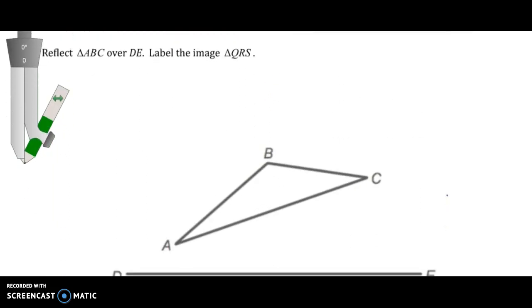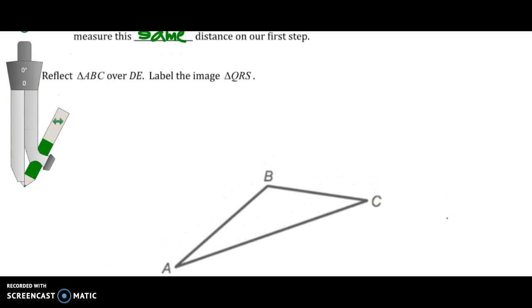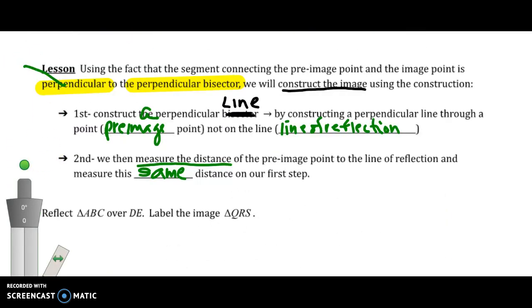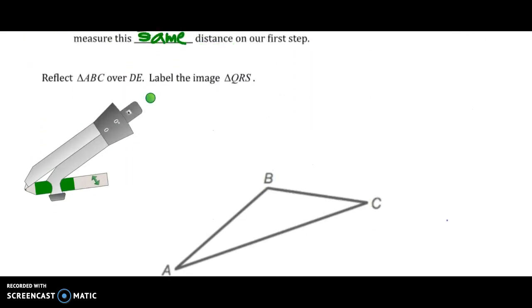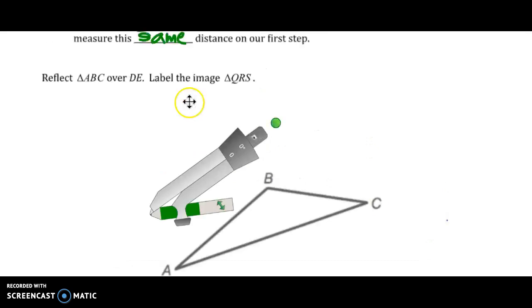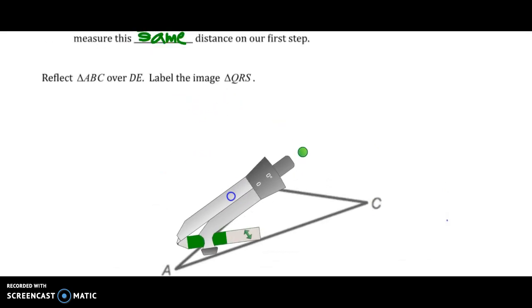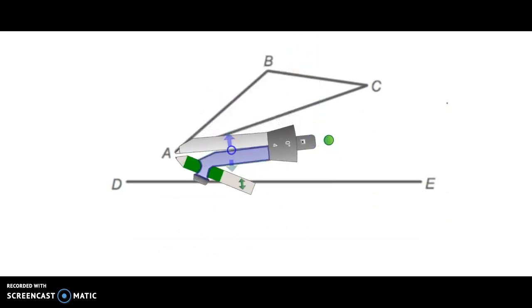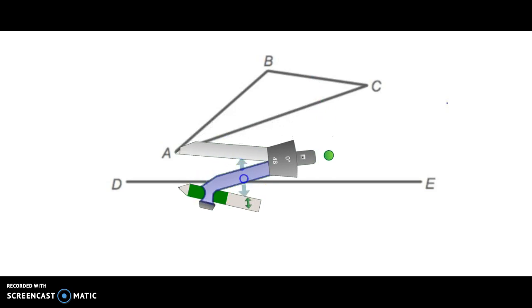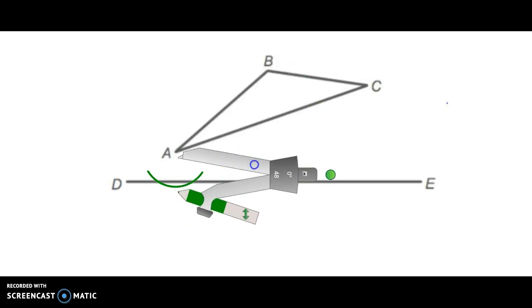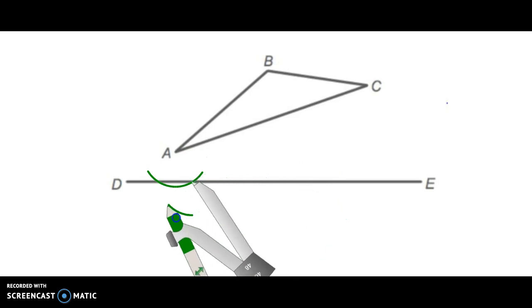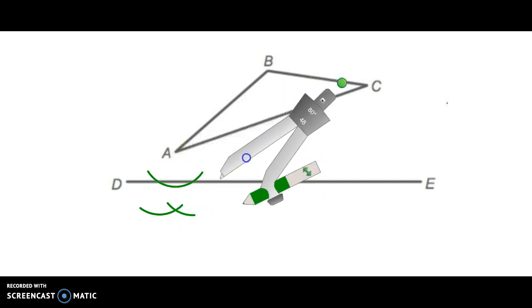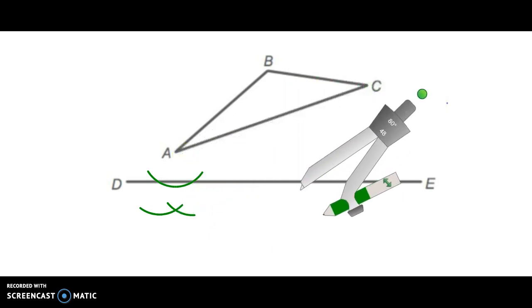Let's see how it's done. So we want to reflect ABC over DE and create a new triangle QRS that will be equal in size and shape to the given triangle. So first thing we need to do is point A is our pre-image point, DE is our line of reflection. We're going to make an arc that goes through DE. We're then going to transfer our compass onto one endpoint and to the other.